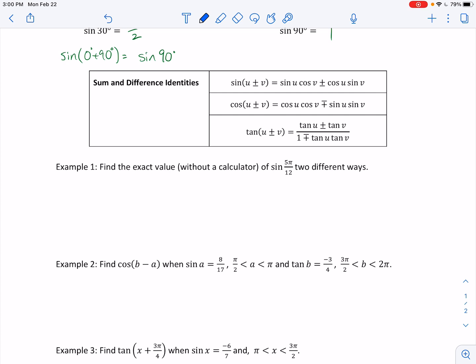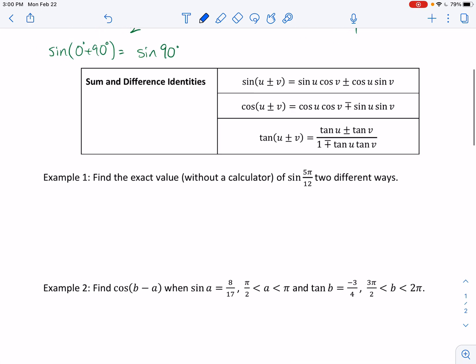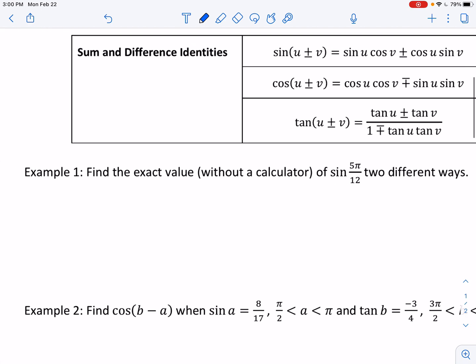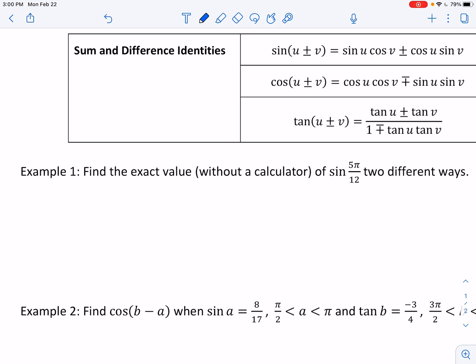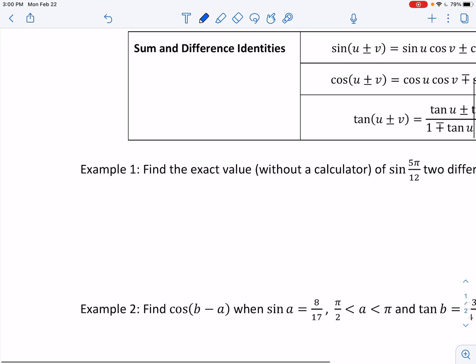The first one, find the exact value of sine of 5 pi over 12 two different ways. So what we can do with this one is we can come up with ways to add things that we know from the unit circle to get 5 pi over 12, okay? So if I have 5 pi over 12, I know I can add or subtract, actually. I could say that this is 3 pi over 12 plus 2 pi over 12, okay? And the reason that I would pick those is because this one reduces to pi over 4, and this one reduces to pi over 6, and those are things that I know from the unit circle.